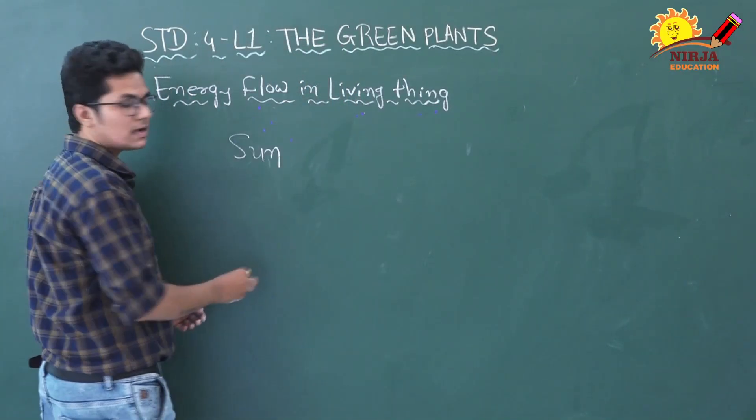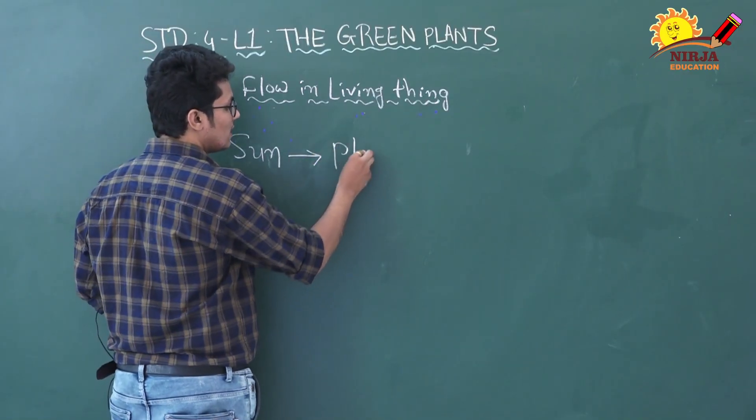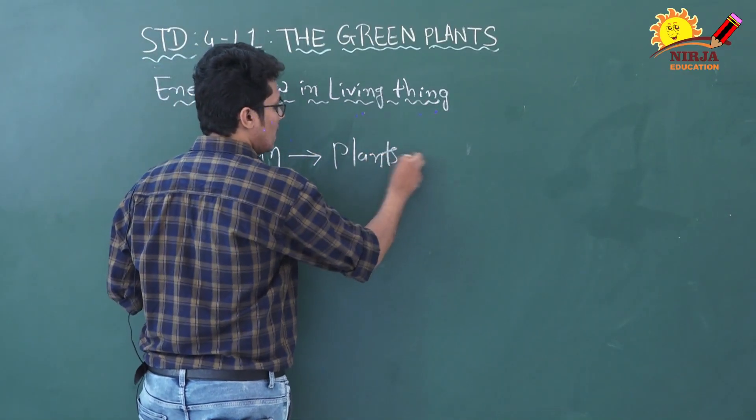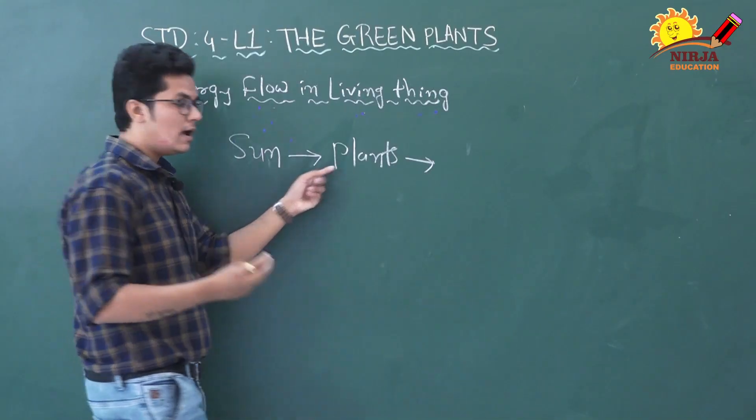First, the sun's energy comes to plants through photosynthesis, and then plants are eaten by animals and humans.